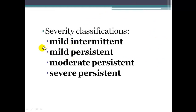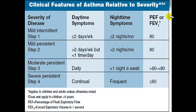Diagnosing asthma is not enough — you also have to classify its severity. There are four categories: mild intermittent, mild persistent, moderate persistent, and severe persistent. The basic differences relate to how severely asthma alters the patient's life, based on nighttime and daytime symptoms. If nighttime symptoms occur two nights per month or fewer, it is mild intermittent. More than two nights per month is mild persistent. More than one night per week is moderate persistent. Frequent symptoms indicate severe persistent.